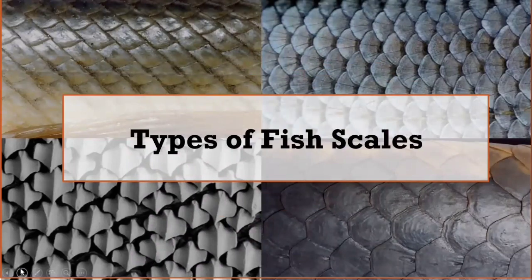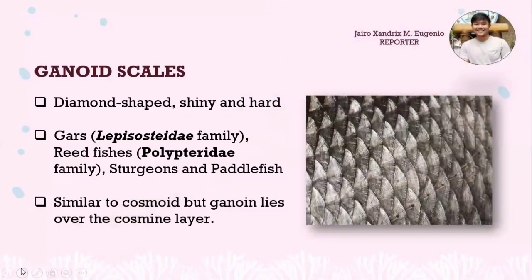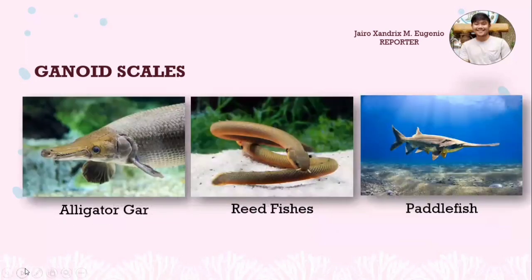There are four types of fish scales. First is the ganoid scale. Ganoid scales are diamond-shaped, shiny, and hard. They can be found in gars of the Lepisosteidae family, reed fishes, sturgeons, and paddlefish. Ganoid scales are similar to cosmoid but have a ganoid layer over the cosmoid layer. Examples of fishes with ganoid scales include the alligator gar, the reed fish, and the paddlefish.